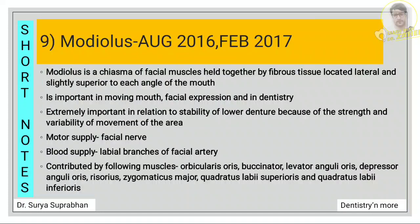Modiolus is a facial muscle located lateral and slightly superior to each angle of the mouth. Mention why it is important in prosthodontics and for complete denture fabrication, which muscles contribute to the modiolus, and then mention the motor supply as well as the blood supply for the modiolus.